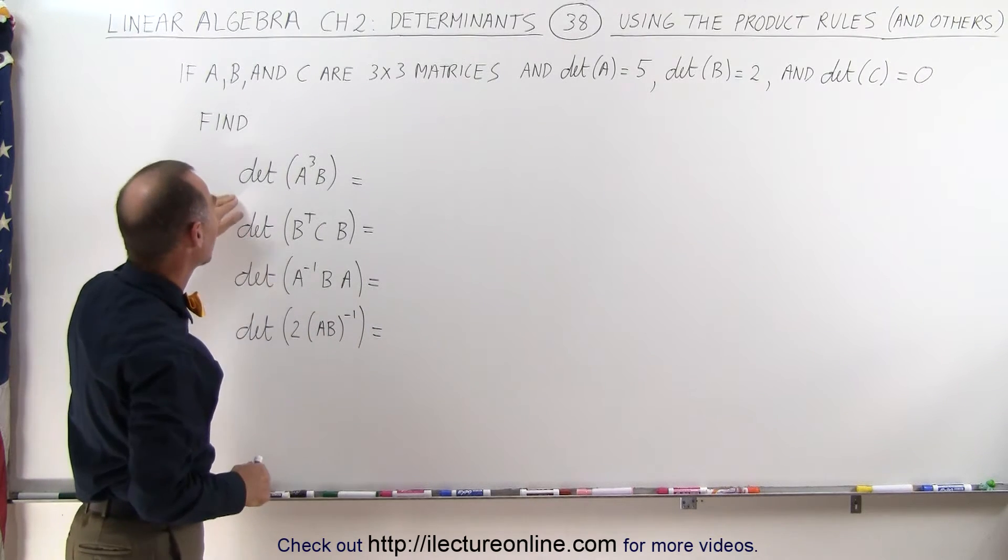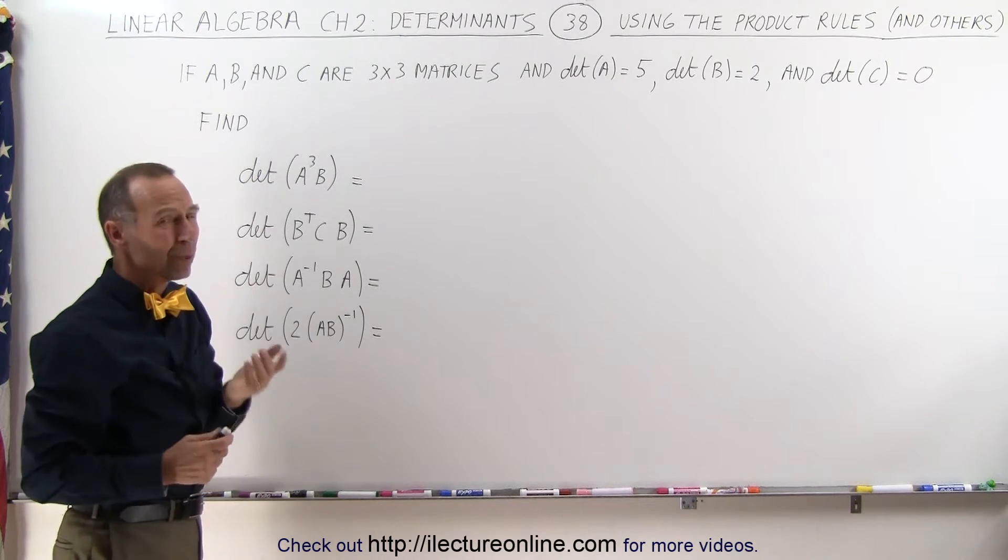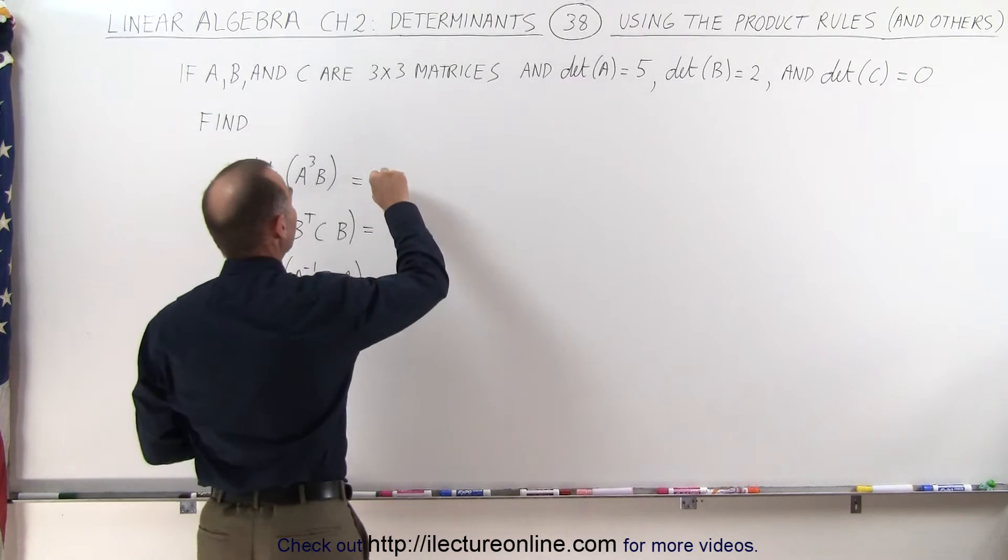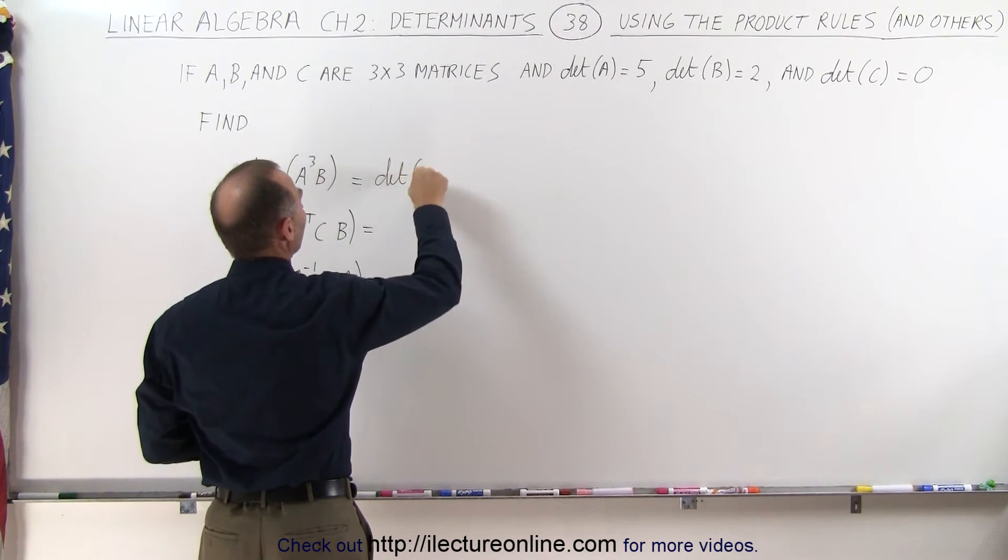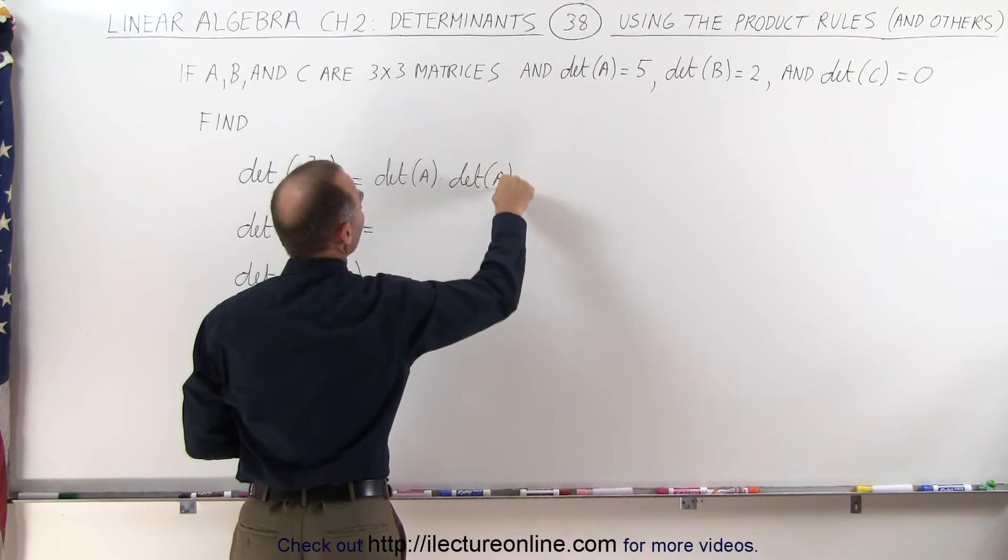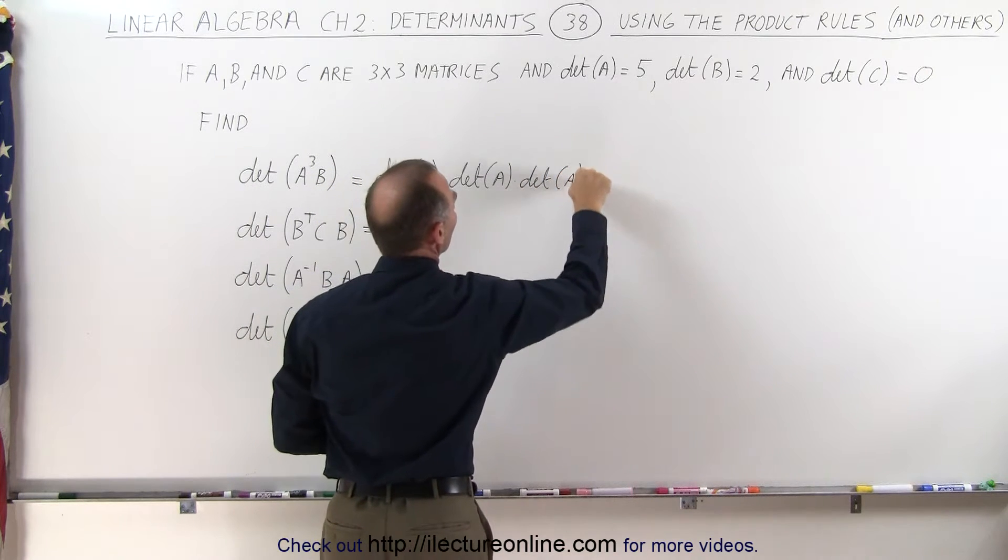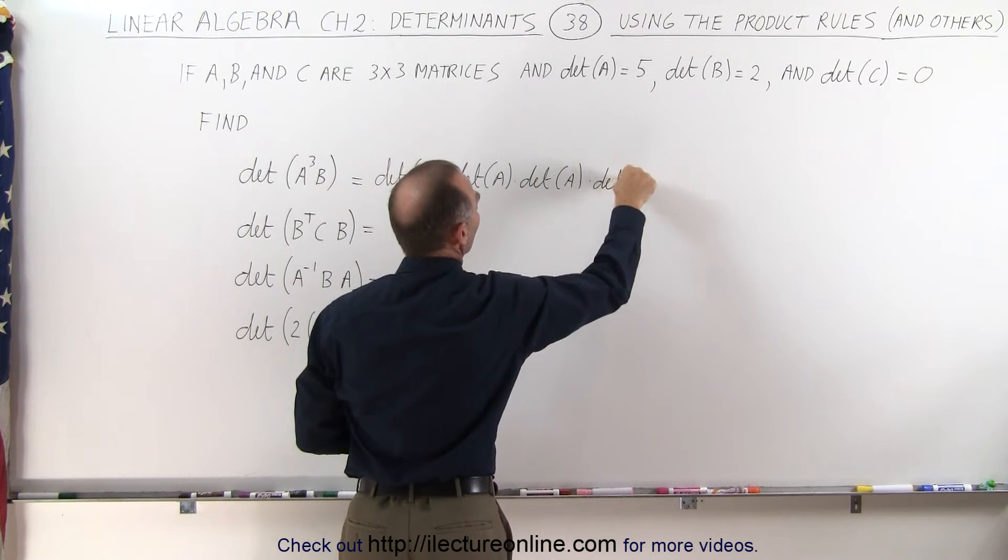First of all, the determinant of A cubed times B. Well that really means the product of the determinant of A times the determinant of A times the determinant of A times the determinant of B.